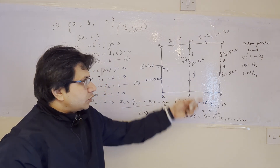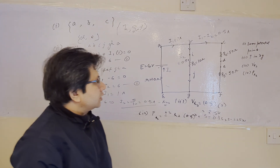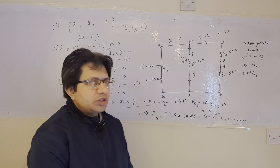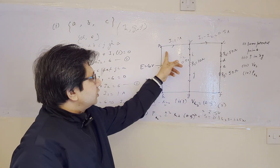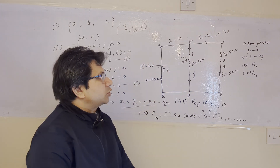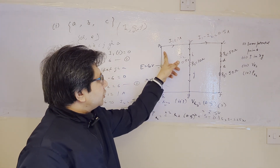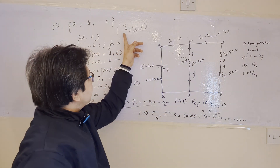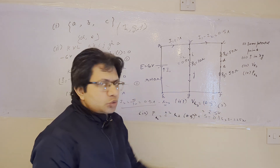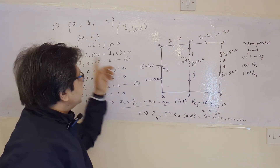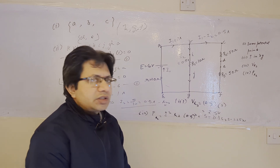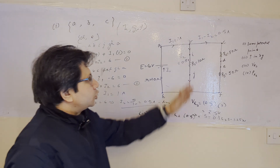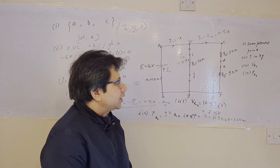इस problem में हमसे पूछा गया था कि एक particular circuit दिया गया है। उस circuit में सबसे पहले Part A में वो points find out करने हैं जो same potential पे हैं। Same potential के points वो होंगे जिनके बीच में कोई resistance न हो। वो combinations हमें साफ दिखते हैं — A, B, C पहला group है जो same potential पे है। Similarly, H, G, F — ये दूसरा group है। और D और E — इनके बीच wire है, wire की zero resistance होती है, इसलिए ये भी same potential पे हैं। Second part में current पूछी गई BG branch में, उसके लिए KVL apply करना पड़ेगा।